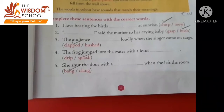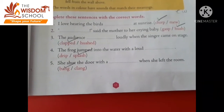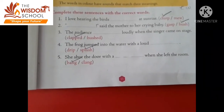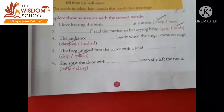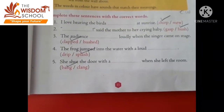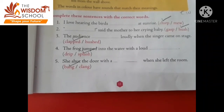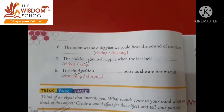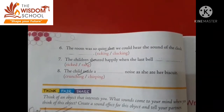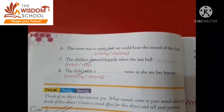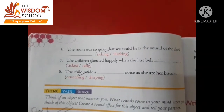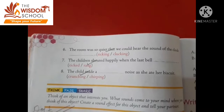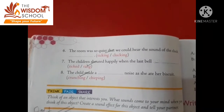Fifth: 'She shut the door with a dash when she left the room.' When she left the room, she shut the door — with a bang. Bang means with a loud noise. So what should come here? Bang. Sixth: 'The room was so quiet that we could hear the sound of the clock.' The sound of a clock is called ticking — tick, tick, tick.